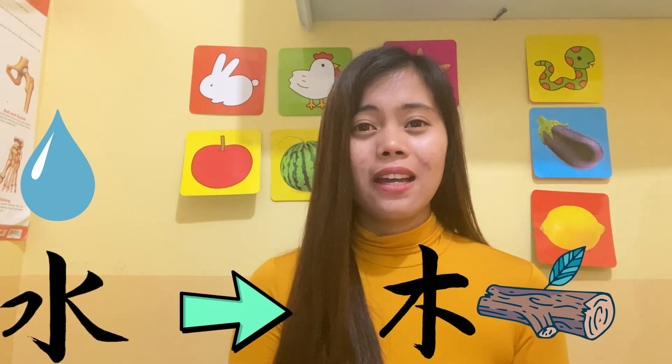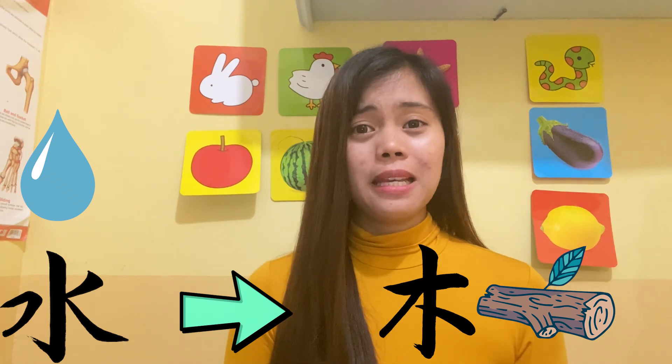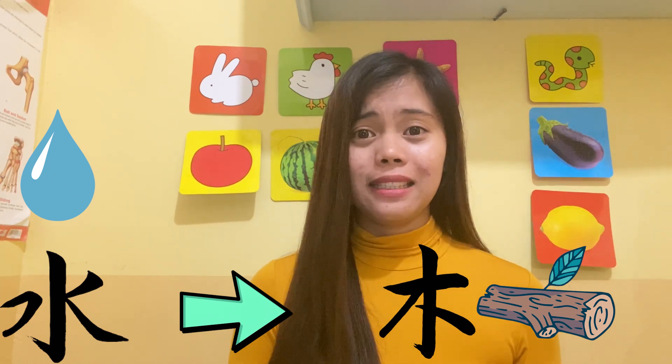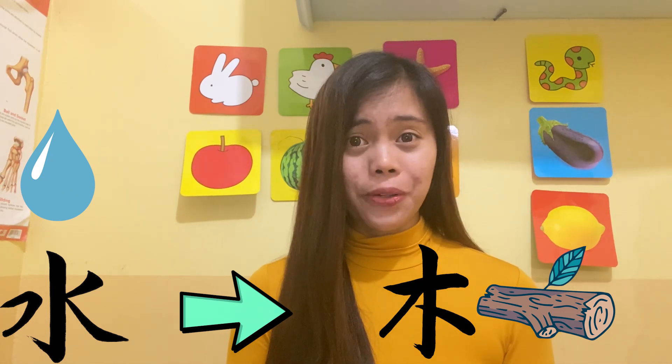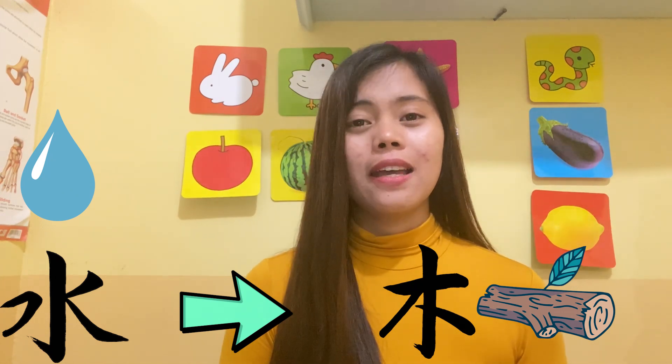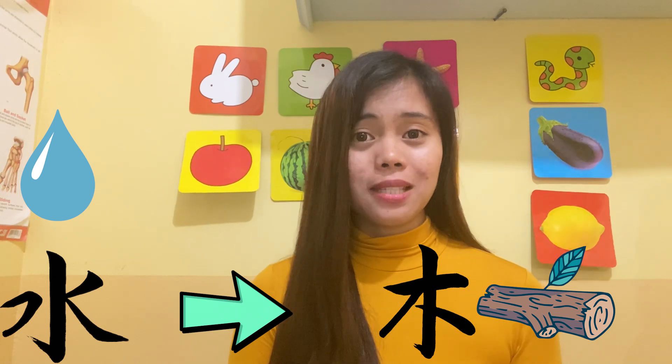Shui shang Mu — Water produces wood. Water is the basic fundamental element of life. The trees need water in order for them to propagate and grow. That's why water produces wood.